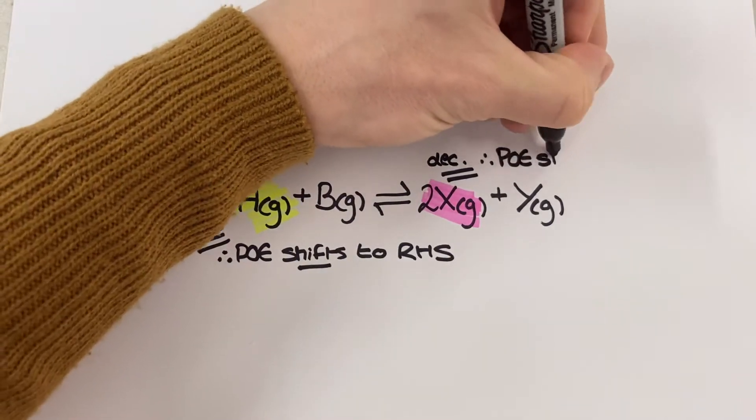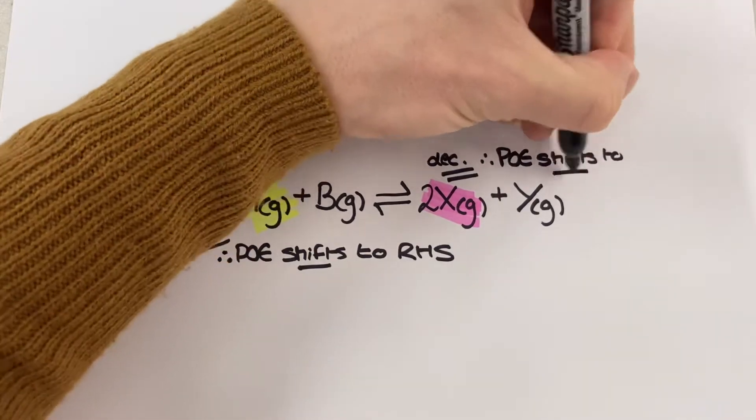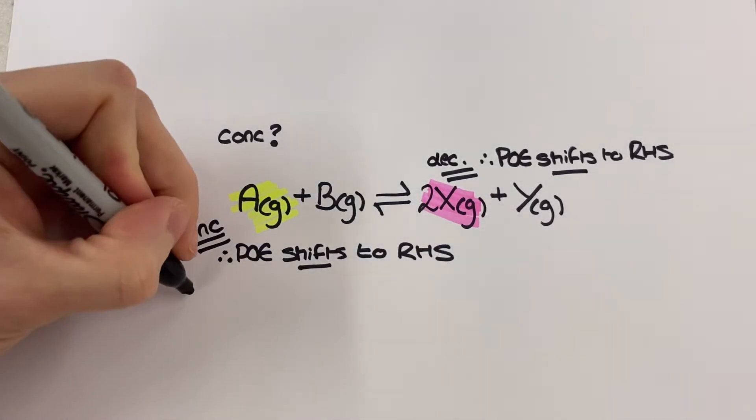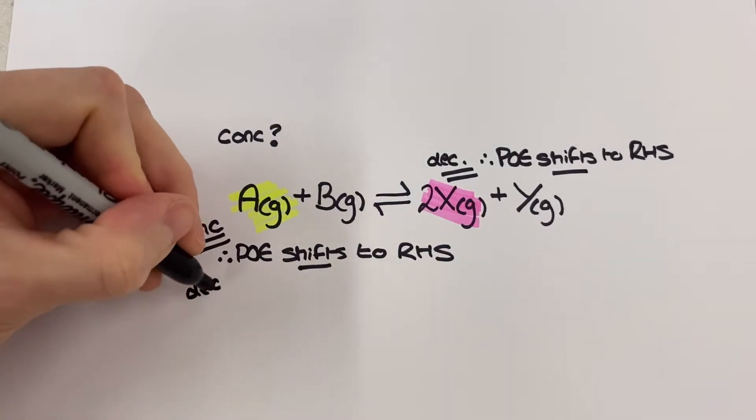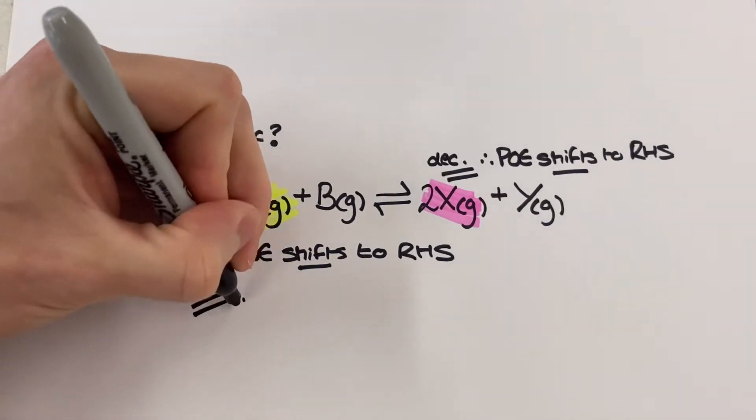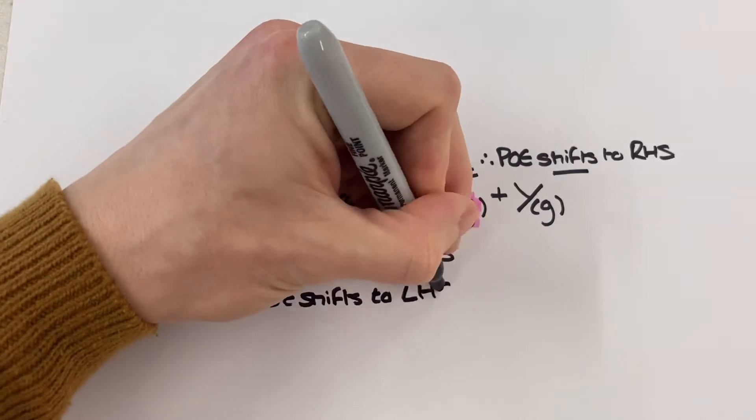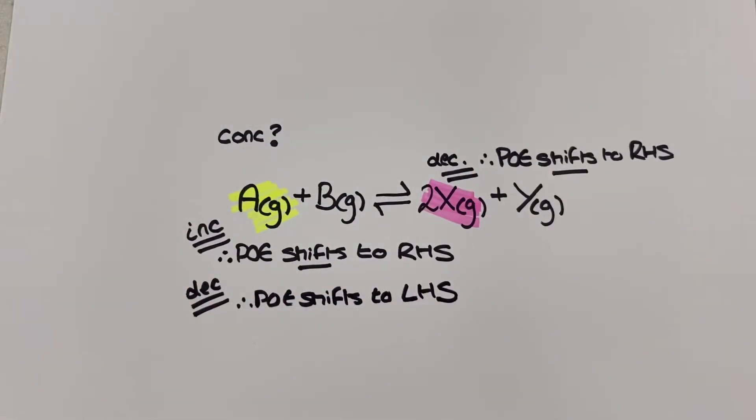This shift allows the equilibrium to re-establish after a little adjustment and minimizes the effect of the change. This kind of shift to the right hand side can also be seen if I was to decrease the concentration of one of the products. If I want to shift the position of equilibrium to the left hand side instead then I would need to either decrease the concentration of a reactant or increase the concentration of a product.